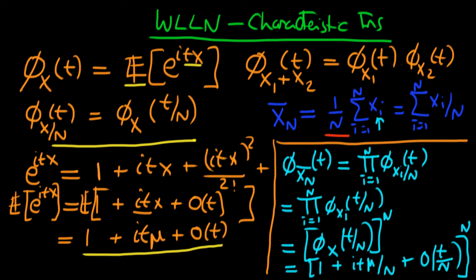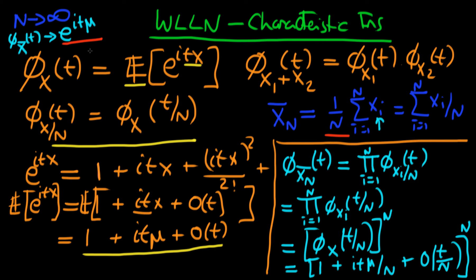We are taking all of this to the power n. As n tends to infinity, this expression is actually equivalent to e to the itμ — that is the definition of the exponential function. So we find that in the limit as the sample size tends to infinity, the characteristic function of x̄ as a function of t tends to e to the itμ. It turns out this is the characteristic function of a random variable which is just constant at value μ.